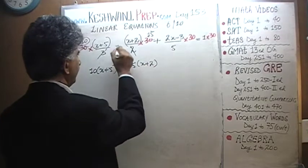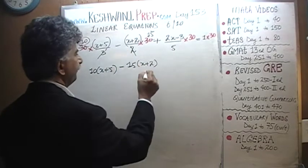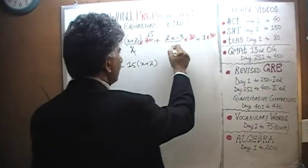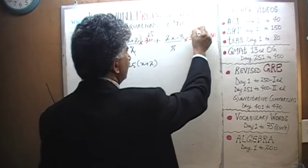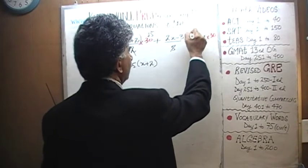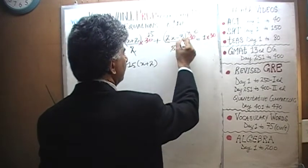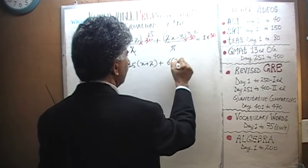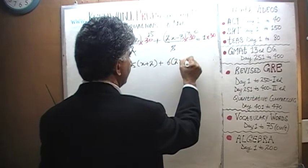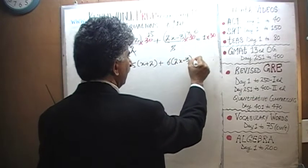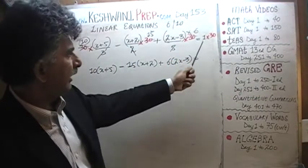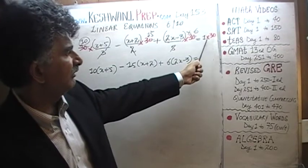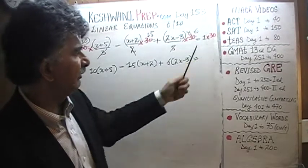There is a minus sign here, right here. Divide top and bottom by 5 — 5 is going to drop out and 30 becomes 6, so we end up with 6 times 2x minus 3. And all of that has to equal 1 times 30, which is 30.